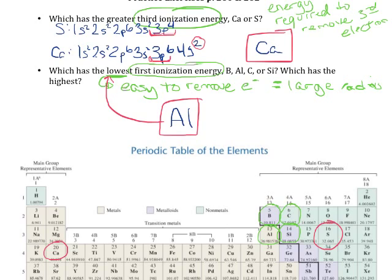What about the one with the highest first ionization energy? The one with the highest first ionization energy is going to have the smallest radius, because atoms with small radii hold their electrons closer to the nucleus, making it more difficult to remove an electron. Boron and carbon have the smallest radii because they are one period above. Since the radius gets smaller moving to the right in a period, carbon is going to have the smallest radius, which means it's going to have the highest ionization energy.